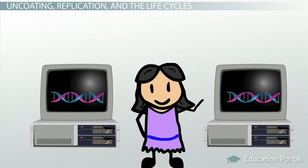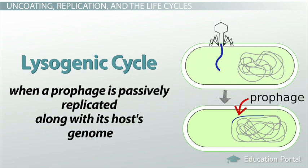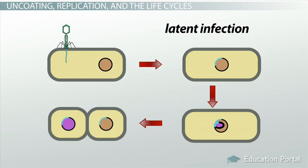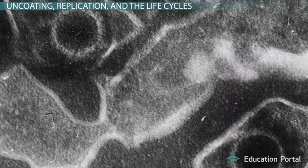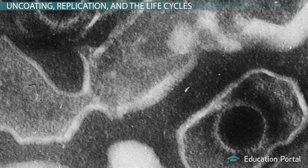When a prophage is passively replicated along with its host's genome, we term it the lysogenic cycle. In this passive cycle, no viruses are produced and the viral genome is simply copied if the host replicates. This cycle is more colloquially known as a latent infection, and its virus is called a temperate virus. This is when the virus lies dormant until triggered. An animal virus cannot undergo a true lysogenic cycle like the bacteriophage can, but slightly similar latent infections do occur.